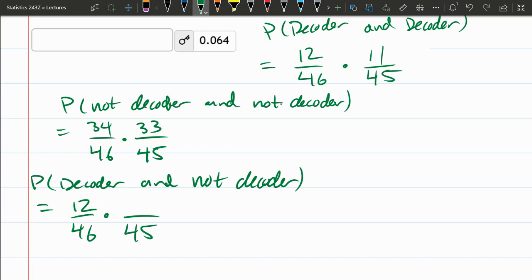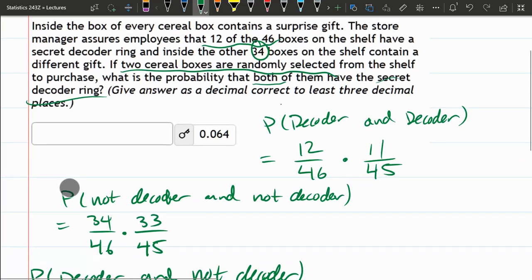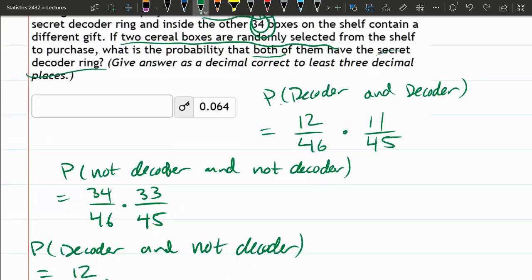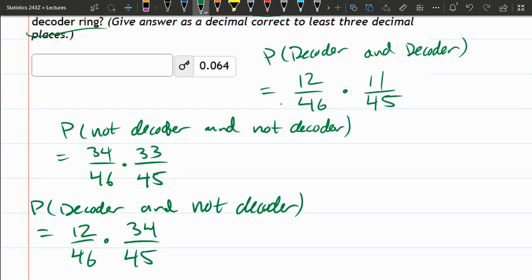Again, that was up in the problem. There's 34 boxes without the decoder. And you might think, oh, shouldn't that be a 33? Shouldn't it be one less? But remember, the first box we picked up had a decoder in it. So it does not reduce the number of boxes without the decoder in them.